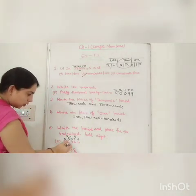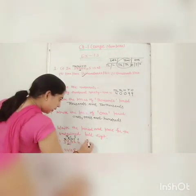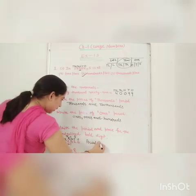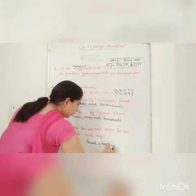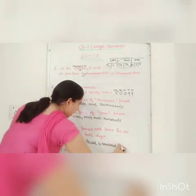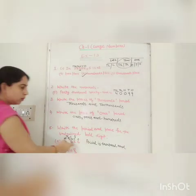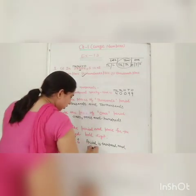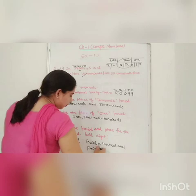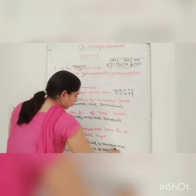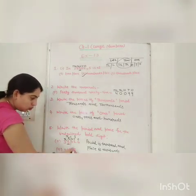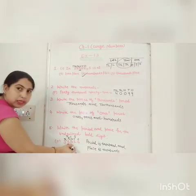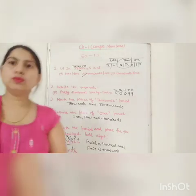So for digit 3 — 3 is in which period? The period of 3 is 1000's. And the place is also 1000's. For digit 8 — you know this is in the 1's period and the 1's place.